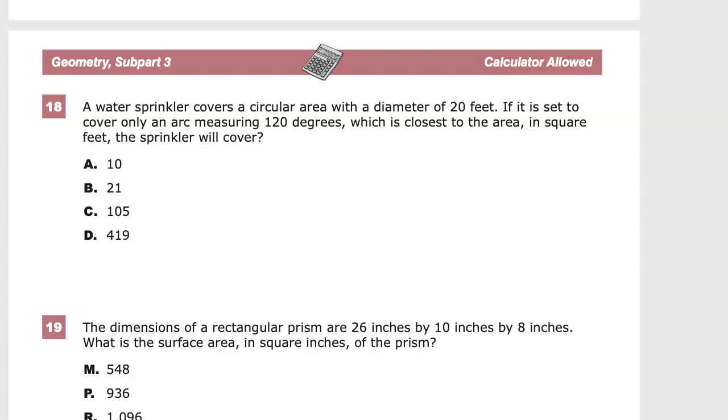A water sprinkler covers a circular area with a diameter of 20 feet. Now, one of the things that you should always be leery of is when they give you something that has a circle in it, and if it's a circular area, that's certainly the case here. You need to look to see what they're actually giving you.